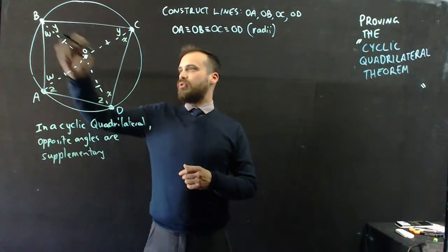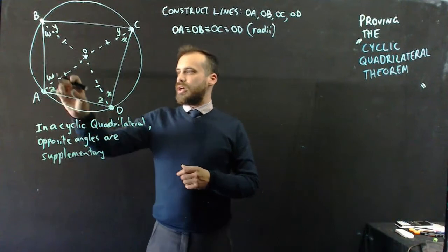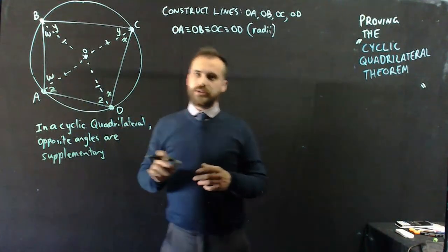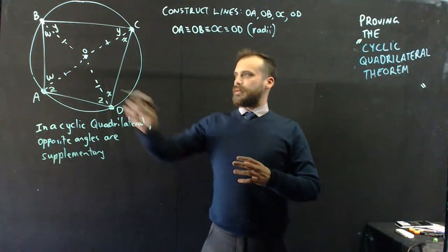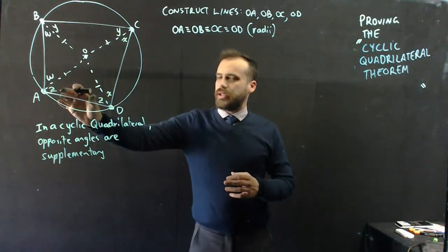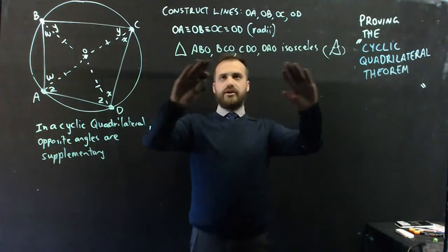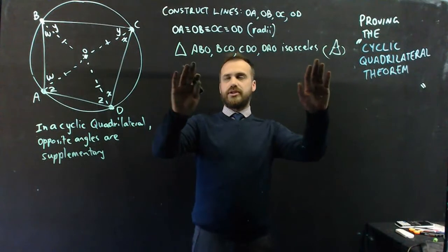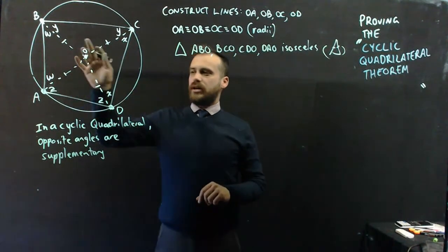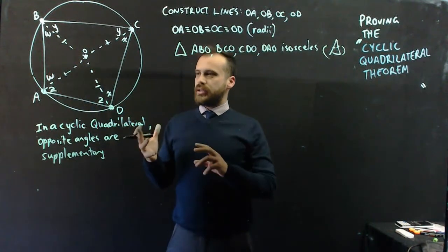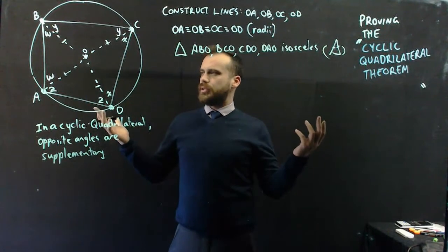And so now we have four isosceles triangles, and we know that all of those angles equal, equal, equal, and equal. All right, so I'll just write in those four triangles are isosceles. I'm not going to make mention yet of W, X, Y, and Z. We'll move on to that.